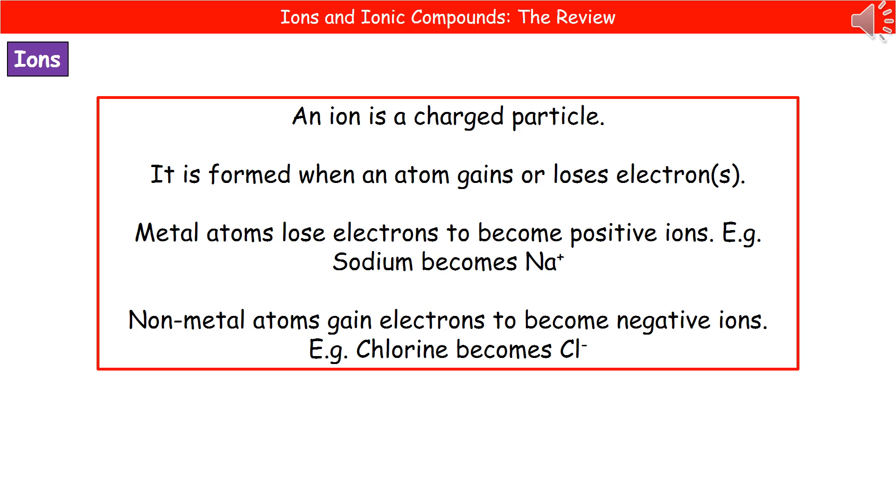Now, don't forget that the number of charges that we find on any particular ion is determined by the number of electrons that are either gained or lost. So that if we've got one electron being lost, it's a plus one. If we've got one electron being gained, it's a minus one. If we gain two electrons, it's a two minus and so on.